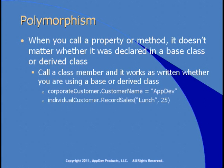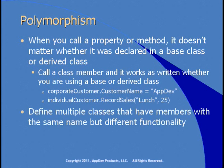Same thing with methods. We create an instance of the individual customer class and call the recordSales method to record what was bought and how much it cost. We don't really need to know whether recordSales is specific to individual customers or whether the base customer class has a recordSales method. It doesn't matter — that's one aspect of polymorphism. The other aspect is that you can have multiple classes with members of the same name that do entirely different things.